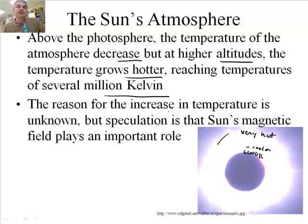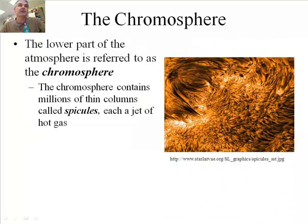But the reason for the increase in the temperature is unknown. We don't really know this. But we think it has something to do with the magnetic field. So it's an interesting question. Why is it several million degrees up here, millions of degrees? But why is it cooler closer here and of course on the surface? We don't really know. But they think it has something to do with what's called the magnetic field.